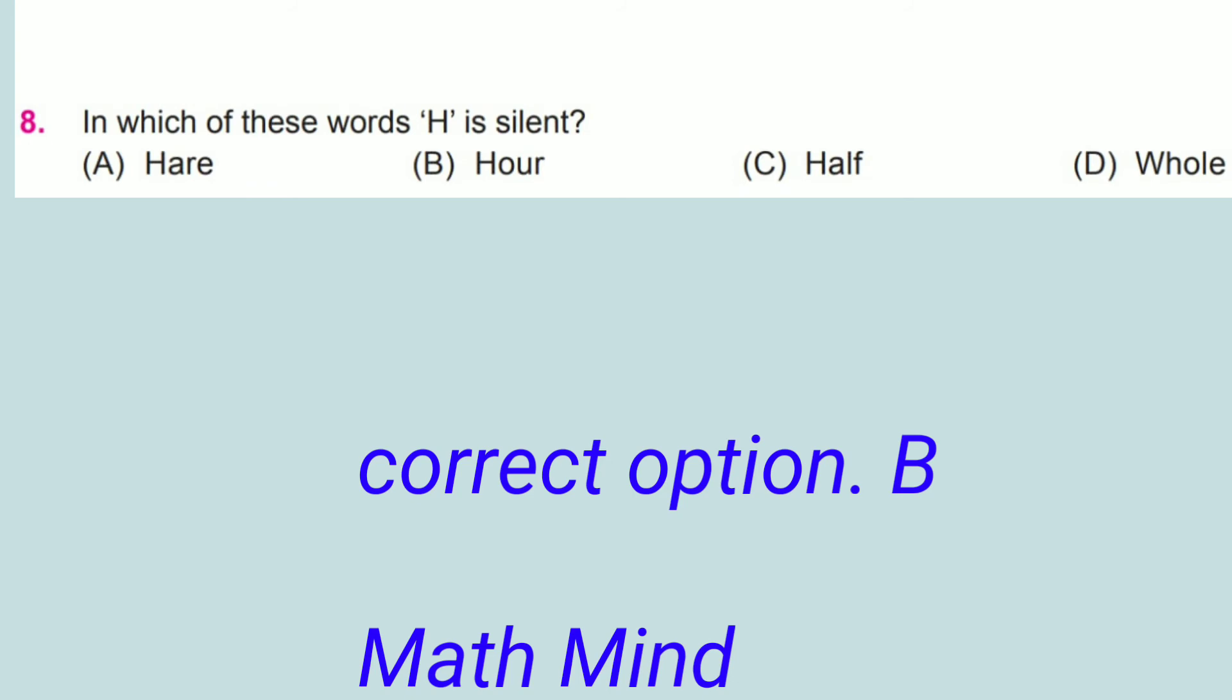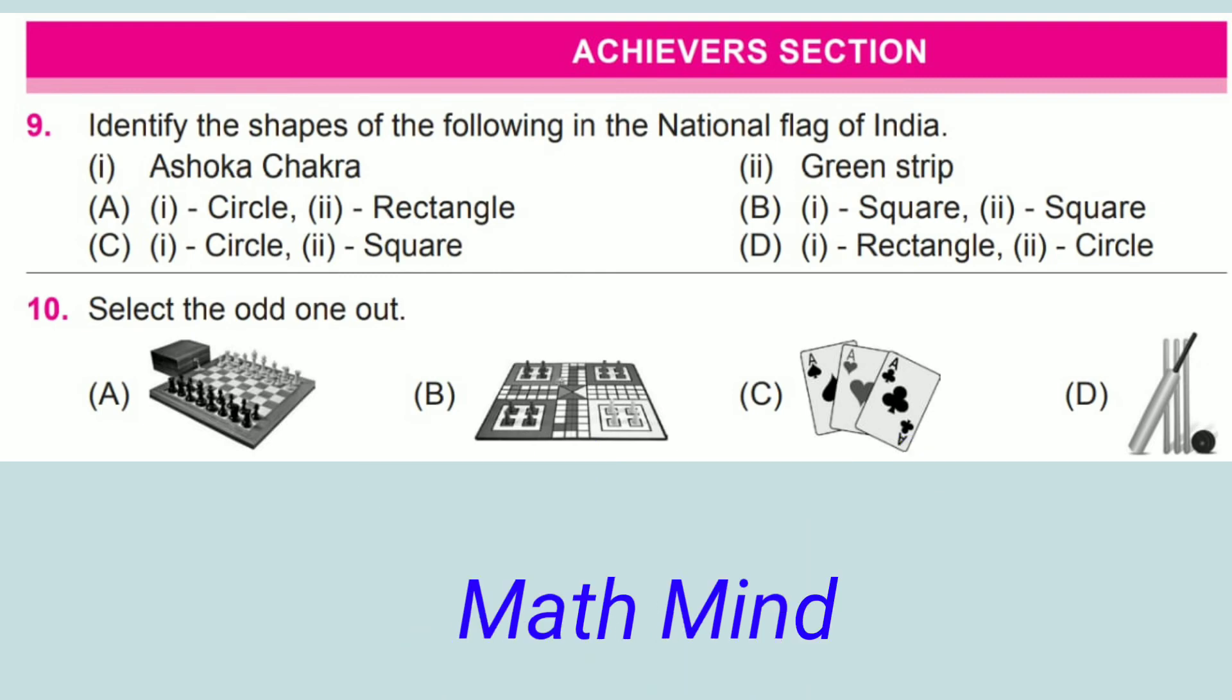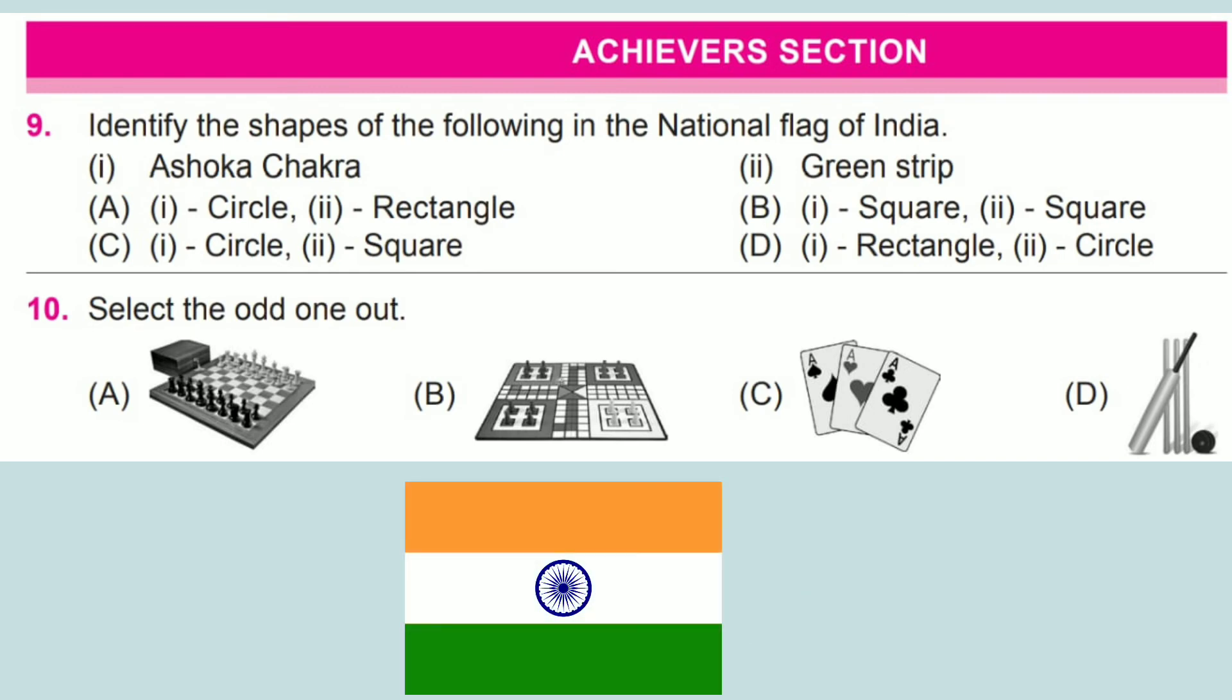Achievers section. Question number 9: Identify the shapes of the following in the national flag of India. First, Ashoka Chakra - it is in a circular shape. Second, green stripe - it is a rectangular shape. Hence, option A is correct: one circle, two rectangles.